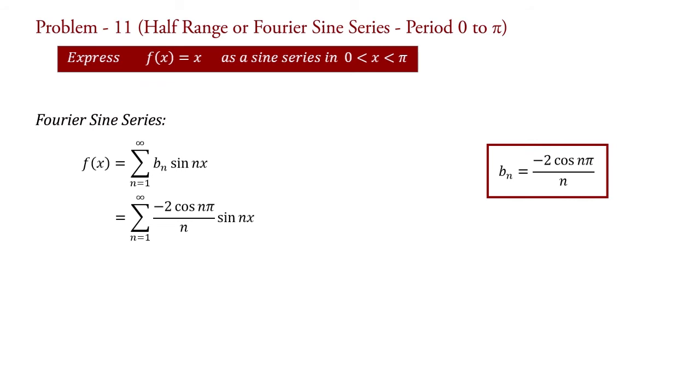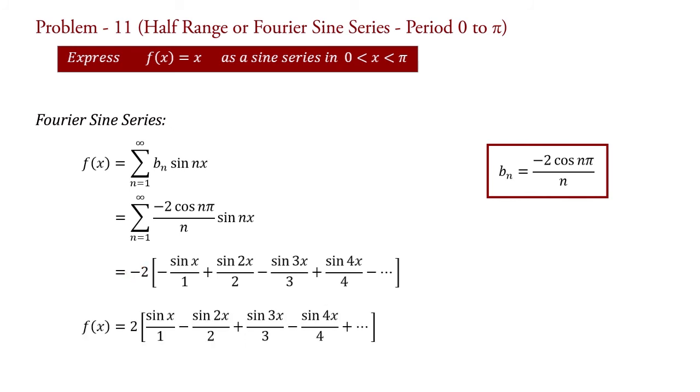In expanding form, it becomes f of x equal to minus 2 into bracket minus sin x upon 1 plus sin 2x upon 2 minus sin 3x upon 3 plus sin 4x upon 4 minus so on. This is the required form of the series.